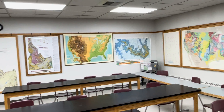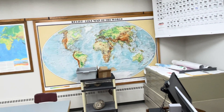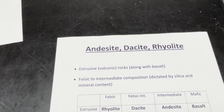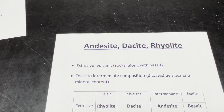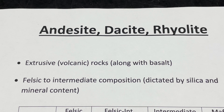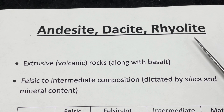Here we are back in the Evergreen Building at the College of Southern Idaho for another video in our Rocks with Wilsey series. We've spent the last couple of episodes looking at igneous rocks, and we're kind of wrapping up our igneous rock lessons. Today we're going to focus on andesite, dacite, and rhyolite.